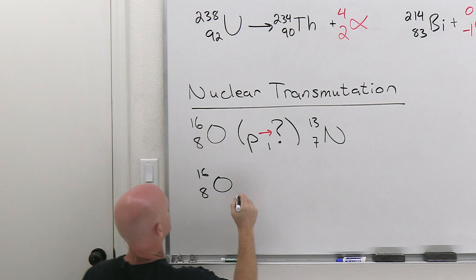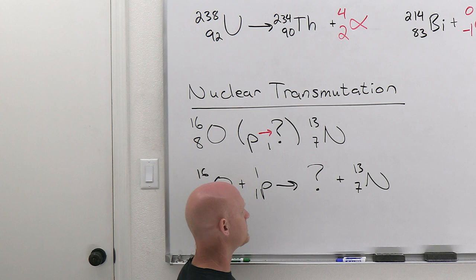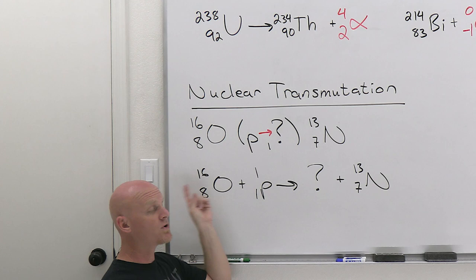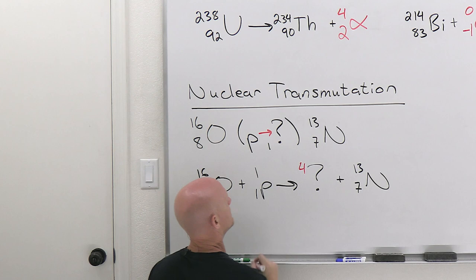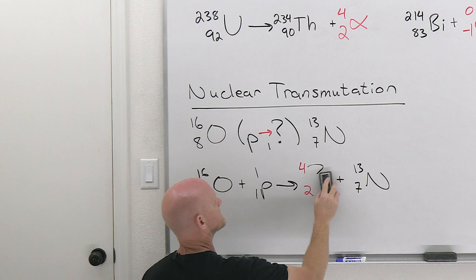And so we can rewrite this here as oxygen 16, eight plus P for proton, one, one, goes to our mystery particle. We're trying to figure out plus nitrogen 13. And so once again, we've got to balance the mass numbers and the atomic numbers. So 16 plus one is 17 on total on the reactant side, 13 plus four gives us 17 on the product side. And then eight plus one is nine, seven plus two would also give us nine.